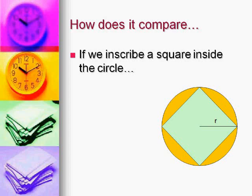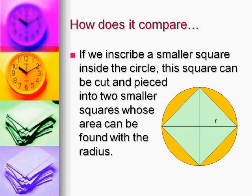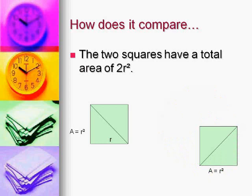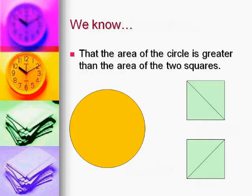Now if we inscribe a square inside the circle, this square can be cut and pieced into two smaller squares whose area can be found with the radius. These two squares have a total area of 2r² — one small square has an area of r², the other has an area of r². Put them together, that's 2r².